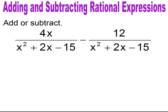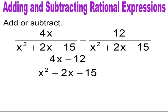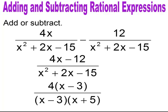Pause and try. You have a common denominator of x squared plus 2x minus 15 and 4x minus 12 in the numerator. You need to factor both the numerator and the denominator. You end up with 4(x minus 3) all over (x minus 3)(x plus 5). Cancel the common factors of x minus 3 and you're left with 4 over x plus 5.